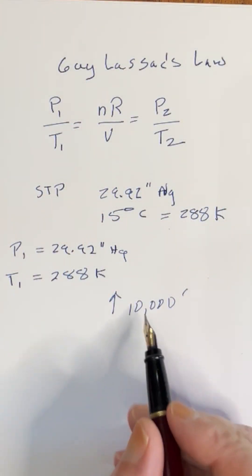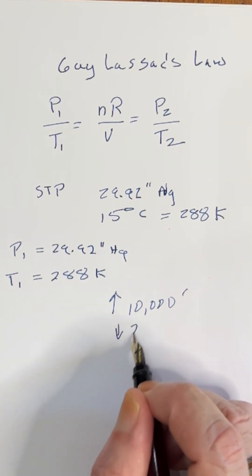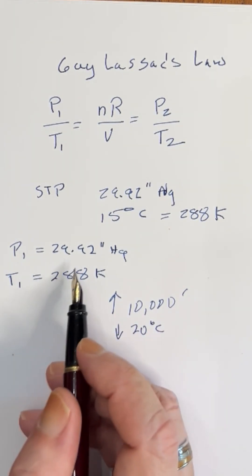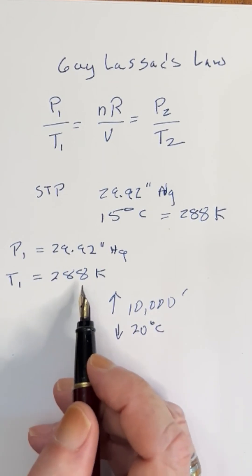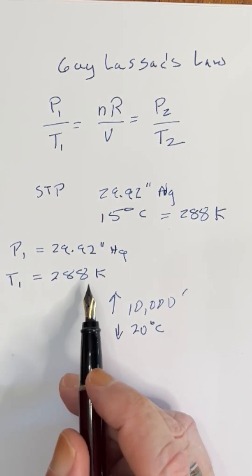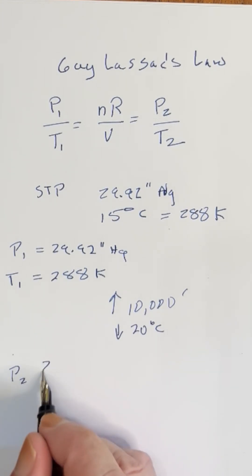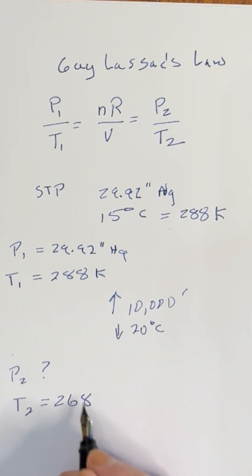I know we're mixing units a little bit, but that's the way I learned it and I'm comfortable with it. So if we went up 10,000 feet from sea level at standard temperature and pressure, the temperature would drop 2 times 10 — that's 20 degrees — so instead of 288 Kelvin, it will be 268 Kelvin. Let's calculate the pressure according to Gay-Lussac's law. If we go up 10,000 feet, P1 is 29.92 inches of mercury, T1 is 288 Kelvin, P2 is what we're looking for, and T2 equals 268 Kelvin.